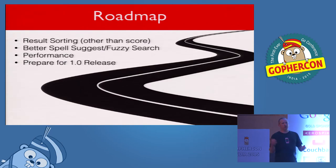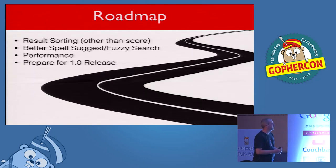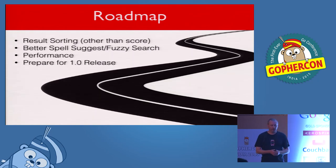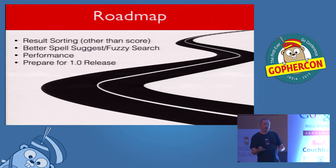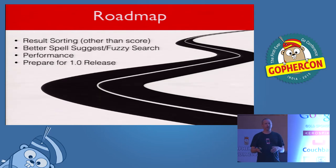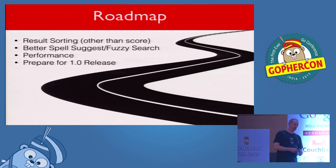Briefly, a little bit of a roadmap. Right now all results are always sorted by score, but there are some important use cases where you want to sort on other fields, so we want to add that capability. Better spelling suggestions and fuzzy search — fuzzy search is really common because humans mistype things, but it's hard to do efficiently; we can trade memory to speed that up, and there are interesting data structures for that. Next, performance — we spent a lot of time getting the features and API right first, but now we're starting to focus on making it perform better. And ultimately we want to prepare for a 1.0 release — not because we're done, but because it's beneficial to stabilize the on-disk format and API before moving to the next version.